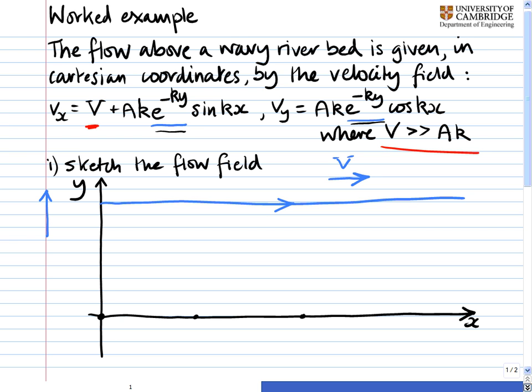Now let's turn our attention to values around y equals zero, where the e to the minus ky terms become roughly equal to one. The velocity in the y direction then becomes Ak cos kx, and that means that it has a maximum at x equal to zero in the upwards direction, the same maximum at x equal to 2 pi over k, again in the positive direction, and then a maximum in the other direction at x equals pi over k.